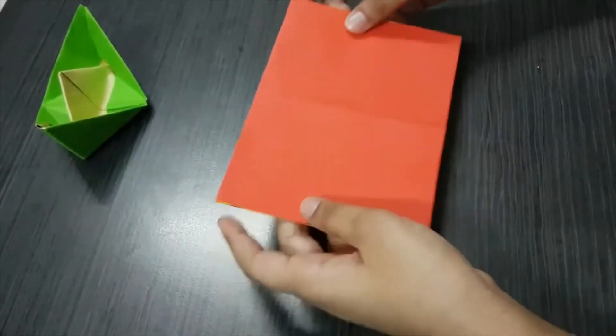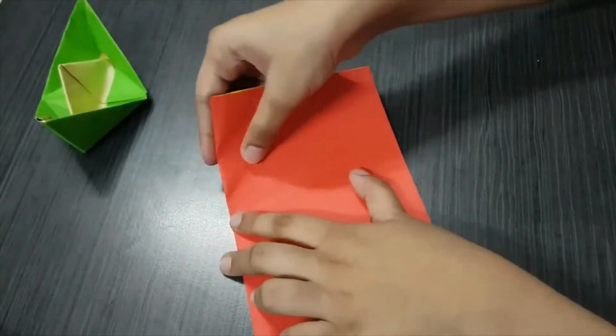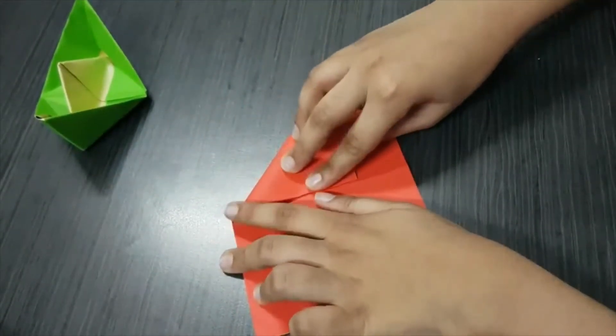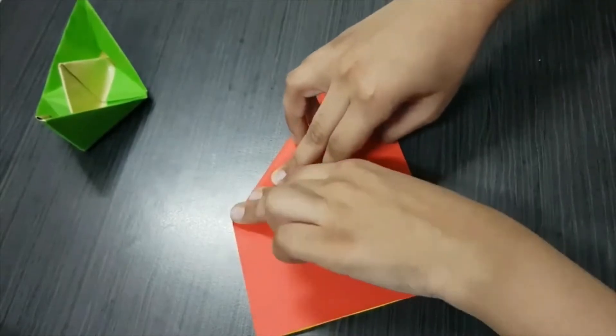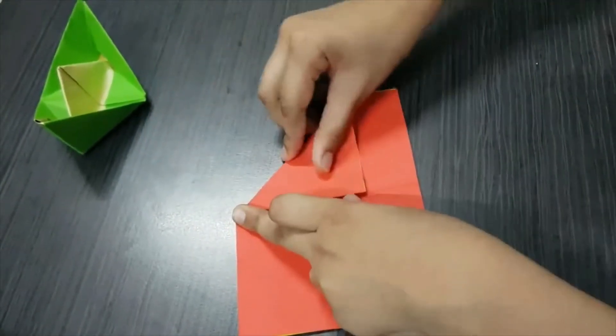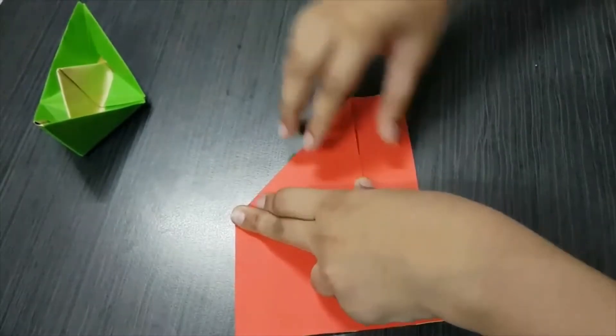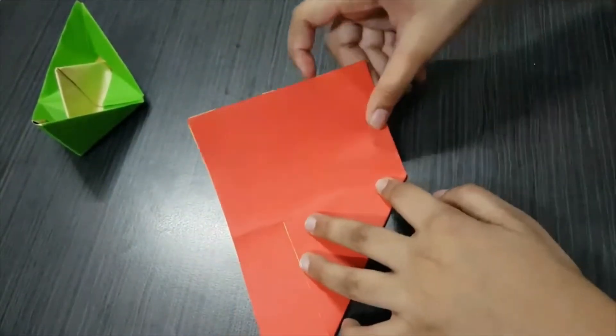See, just like that. Now take this part and form a triangle in this area. Do the same on the other side.